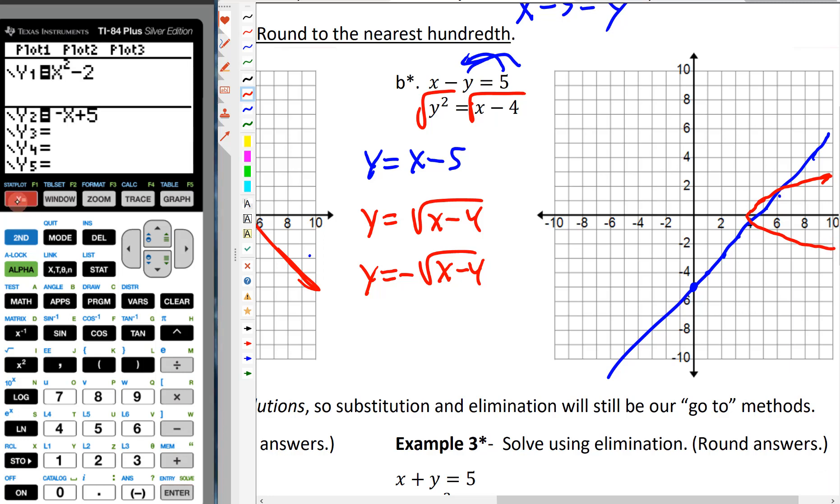Go back to your calculator. Let's put in the line. X minus 5. And the other one, square root. X minus 4. And I'll delete all this other stuff. And the other one is going to be negative, square root, X minus 4.